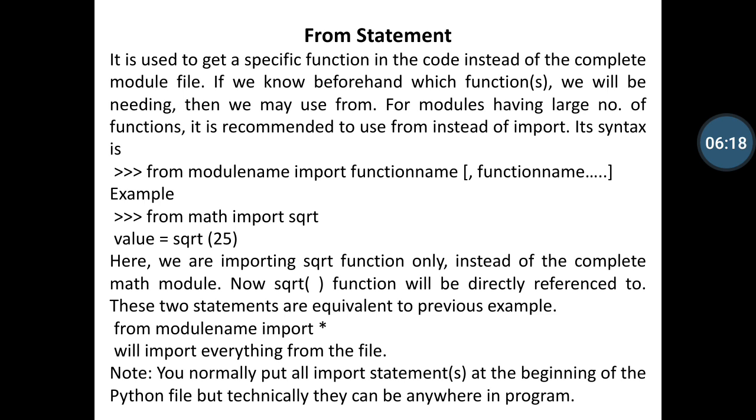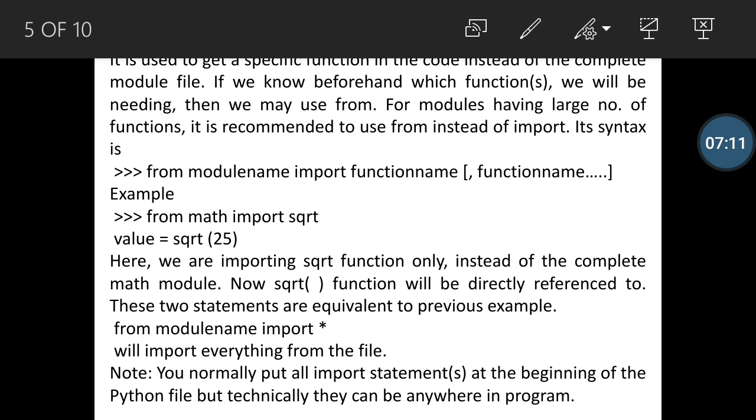Here we define a function sqrt. We define value equals to sqrt with argument 25. Here we are importing sqrt function only instead of the complete math module. Now sqrt function will be directly referenced. These two statements are equal to previous example. From module name import star will import everything from the file. It means the math function related functions are automatically called by import math or from math statement. Note, you normally put all import statements at the beginning of the Python file but technically they can be anywhere in the program.